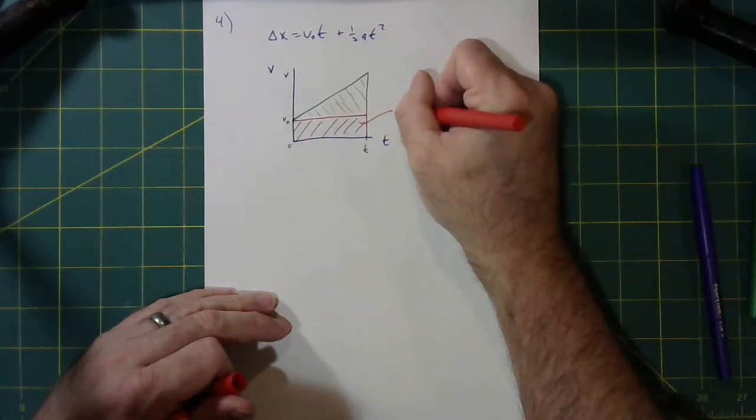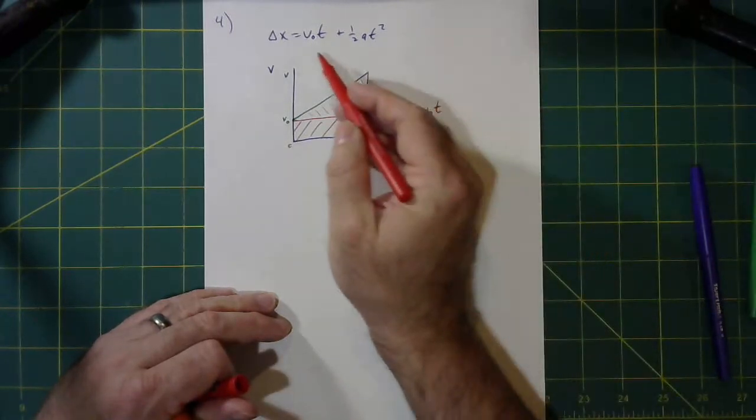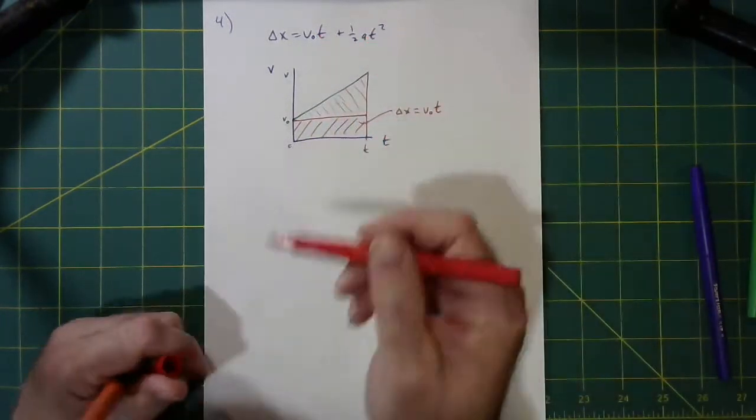And so that displacement would be v naught times t. And you say, hey, look, that's the first term.